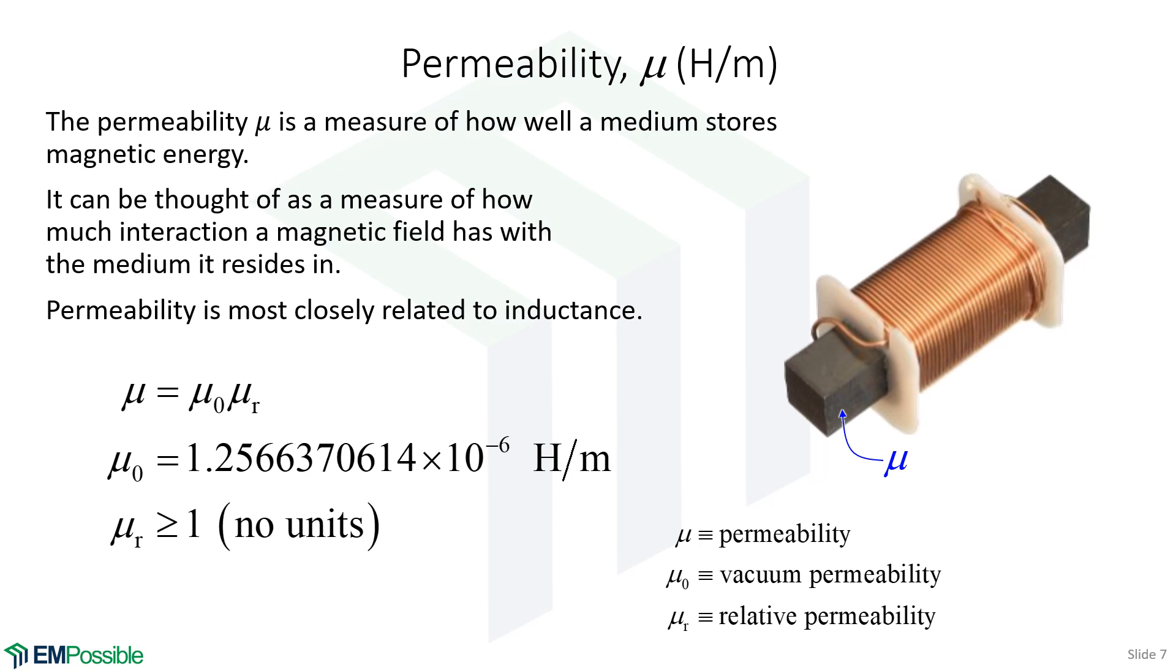Just like the permittivity, we write the permeability as the free space permeability times a relative permeability. So this is 1.2566 times 10 to the minus 6 Henry's per meter. And, of course, Henry's is the units of inductance. And the relative permeability has no units because they're all carried by the free space permeability. And, again, it's a nice convenient number to work with. It's always greater than or equal to 1. And, unfortunately, we don't call that the magnetic constant or anything. We still just call it the relative permeability.